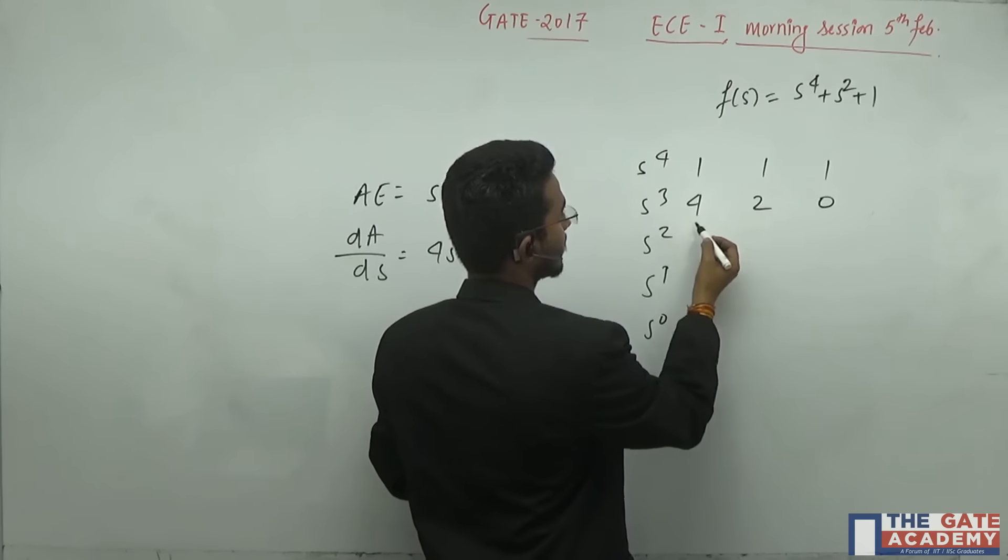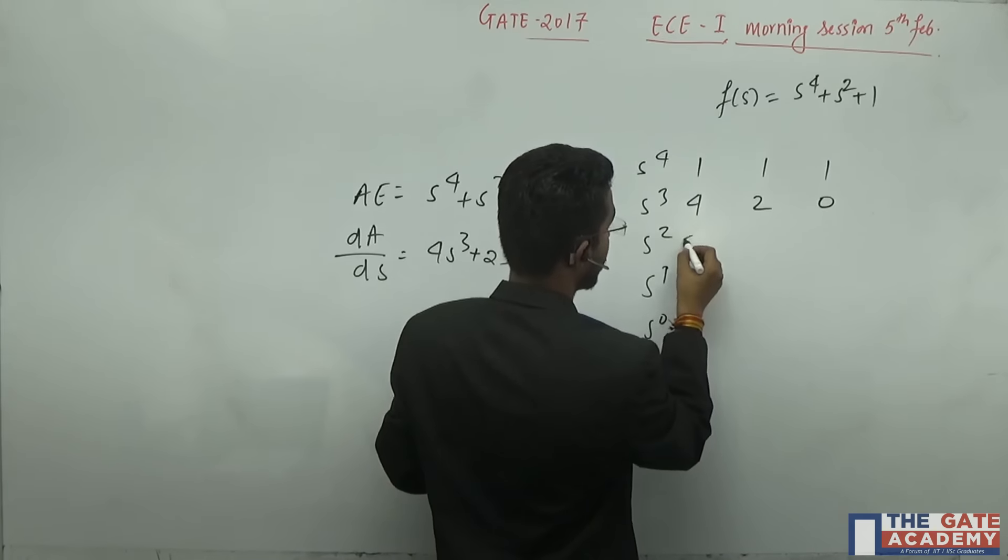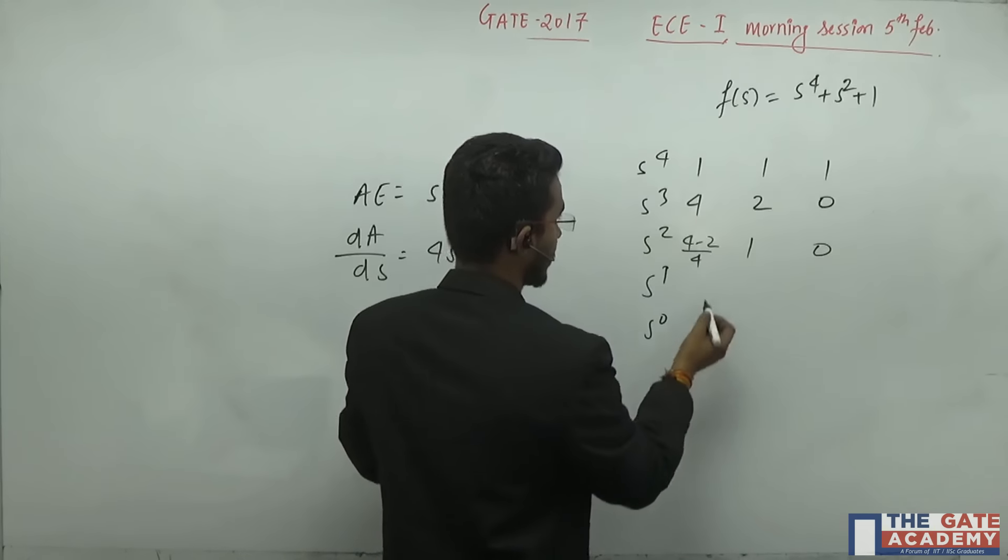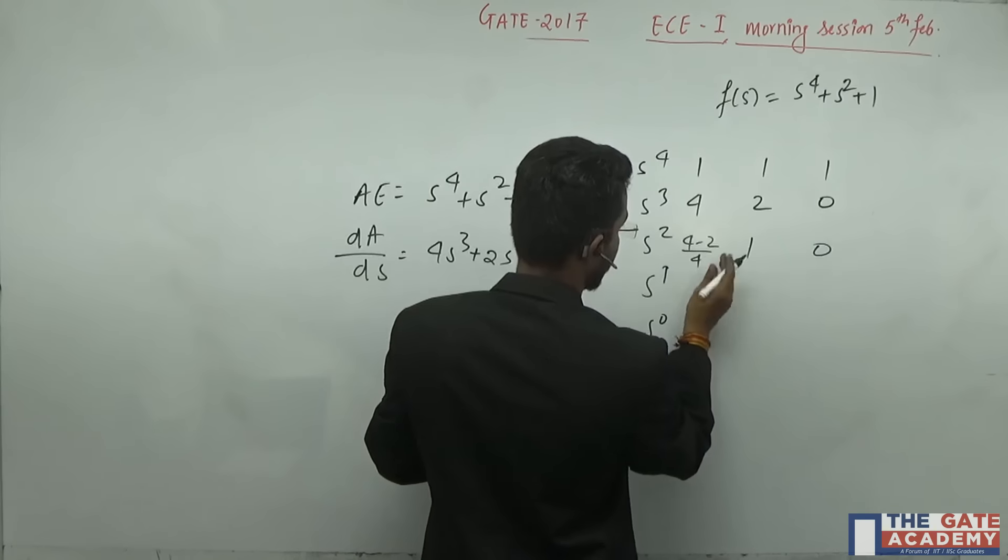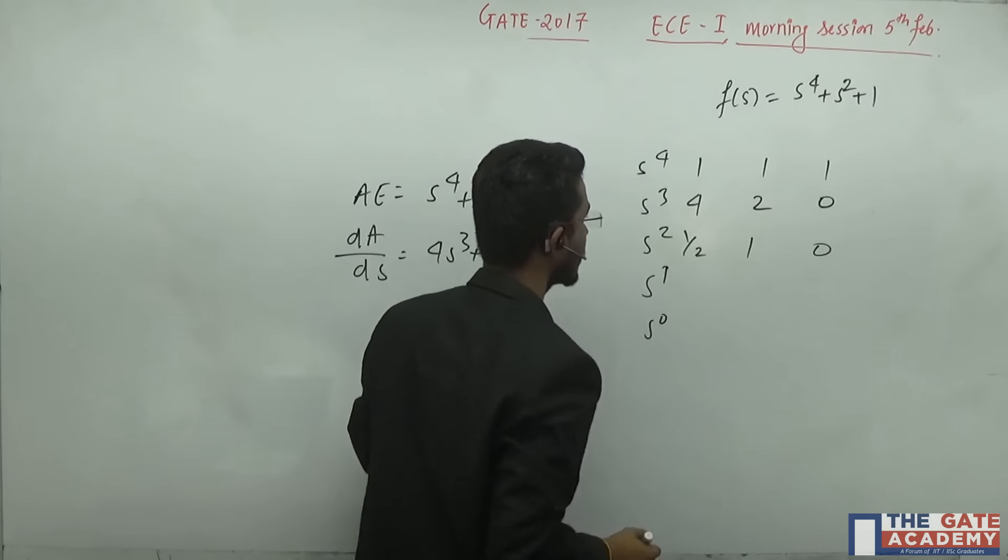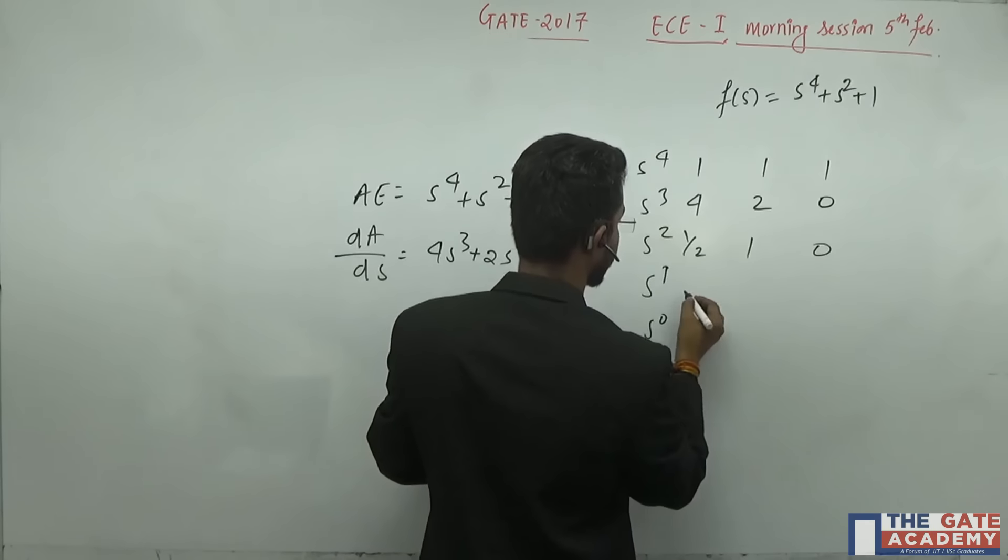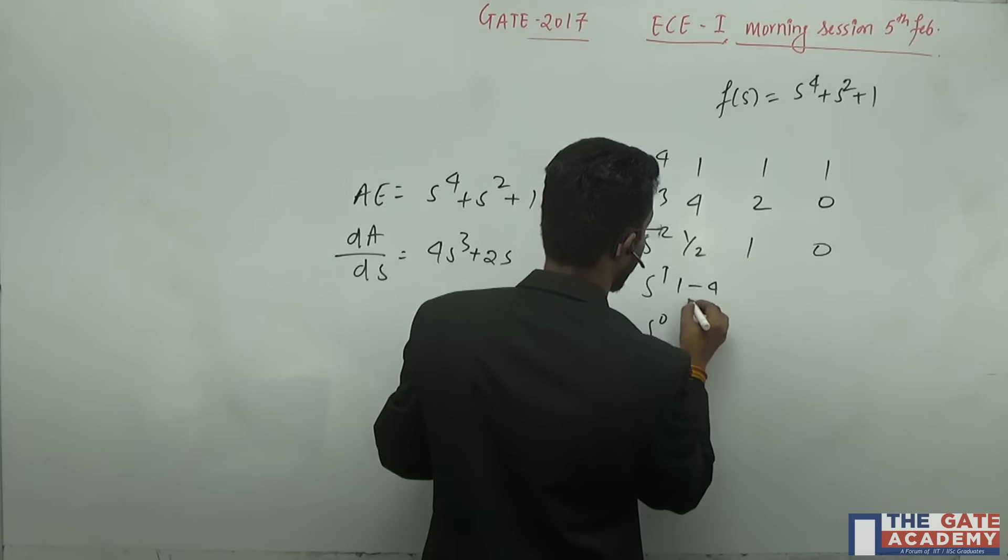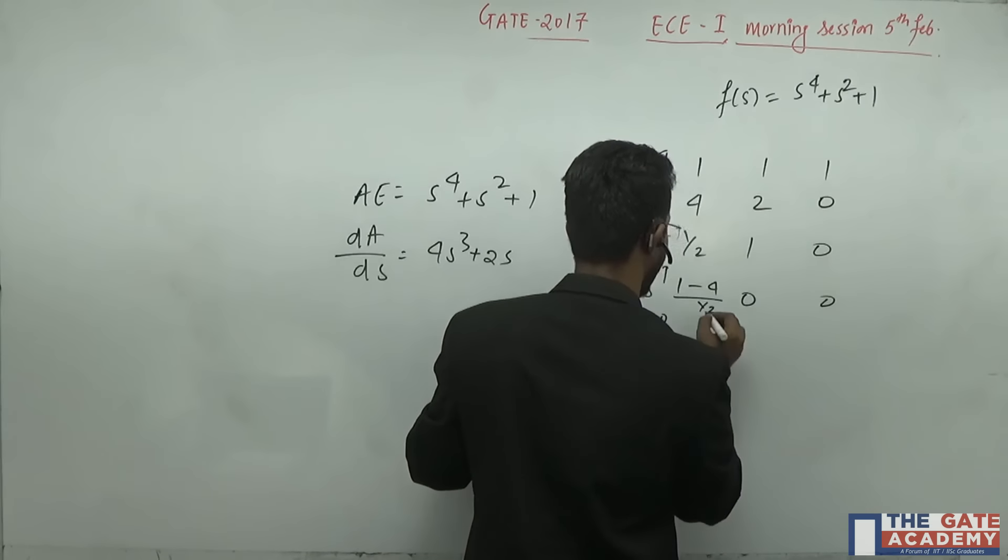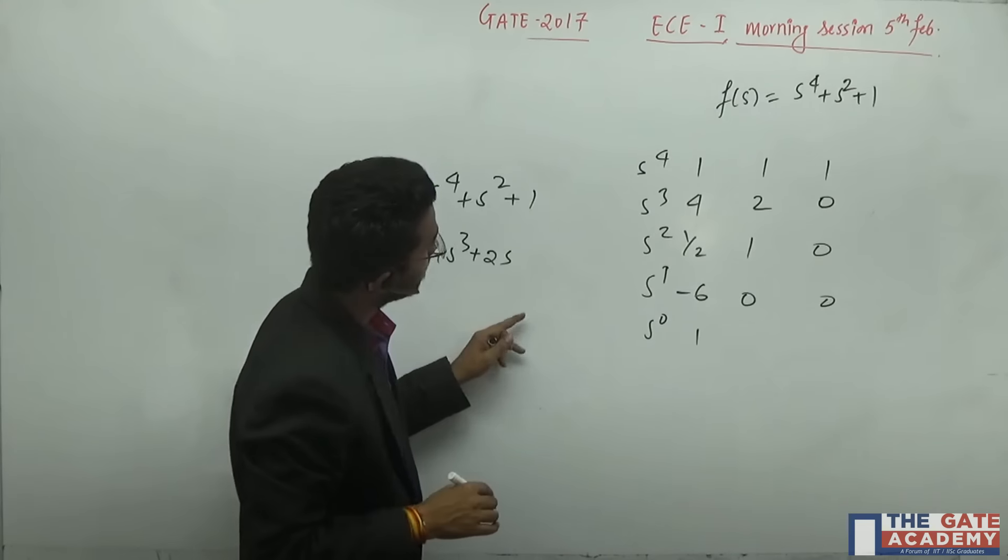Now, draw the table from here: 4 minus 2 divided by 4, 1, 0. Here basically, this number is 1 by 2. Whenever you will do for this, 1 minus 4 divided by 1 by 2, 0, 0, you will get 1 here and 3. Here the value is minus 6.